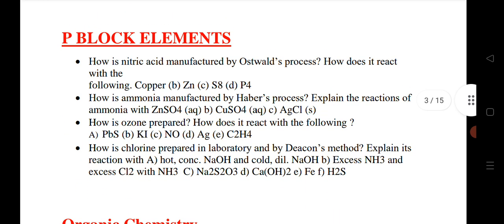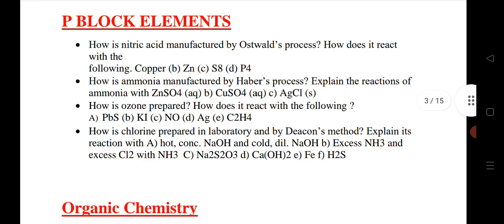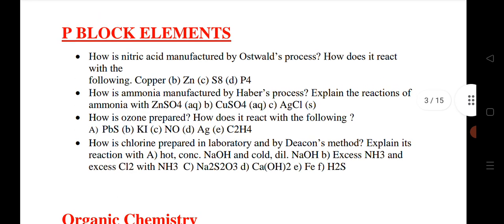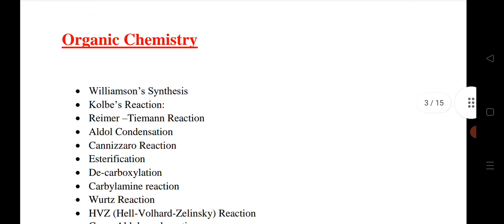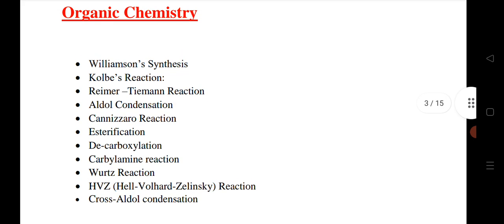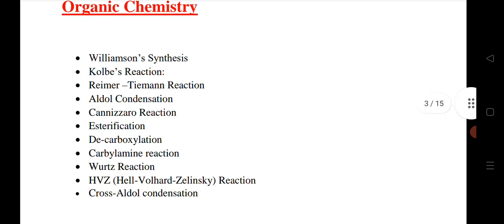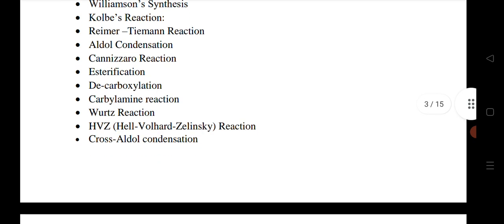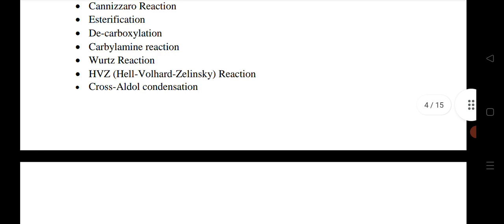P block elements: how is nitric acid manufactured, how is ammonia manufactured, ozone prepared, chlorine preparation. These are very important questions. For organic chemistry I have given 11 reactions, these are very important: Williamson synthesis, Kolbe reaction, Reimer-Tiemann reaction, aldol condensation, Cannizzaro reaction, esterification, decarboxylation, carbylamine reaction, Wurtz reaction, HVZ reaction, cross aldol reaction. This is about LAQs.